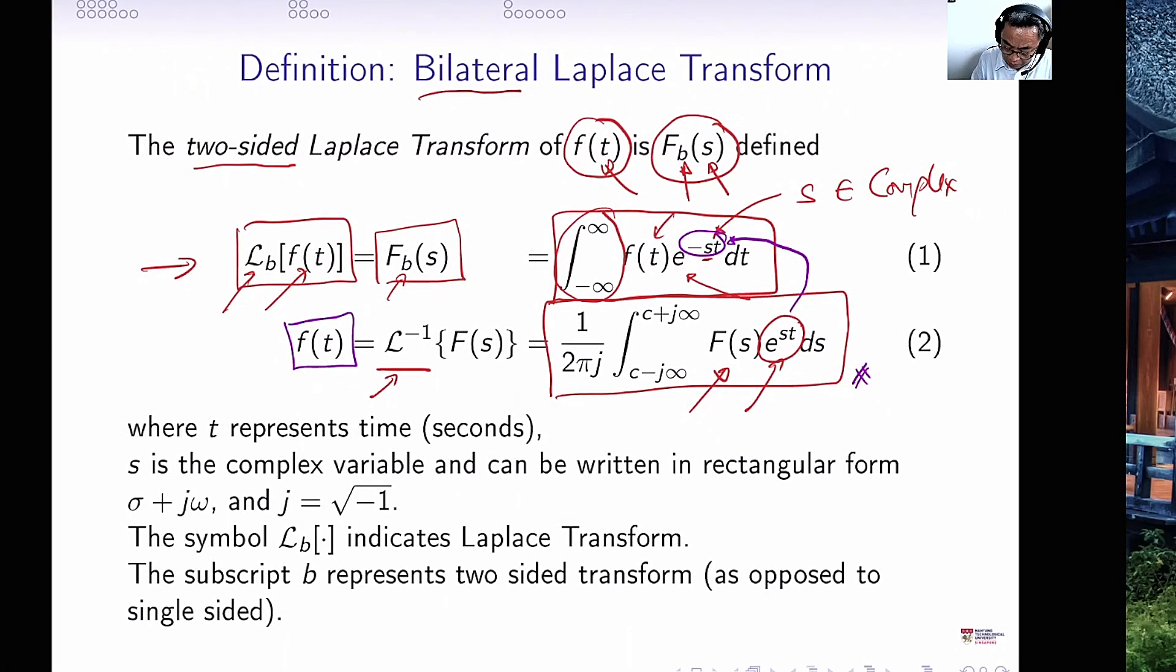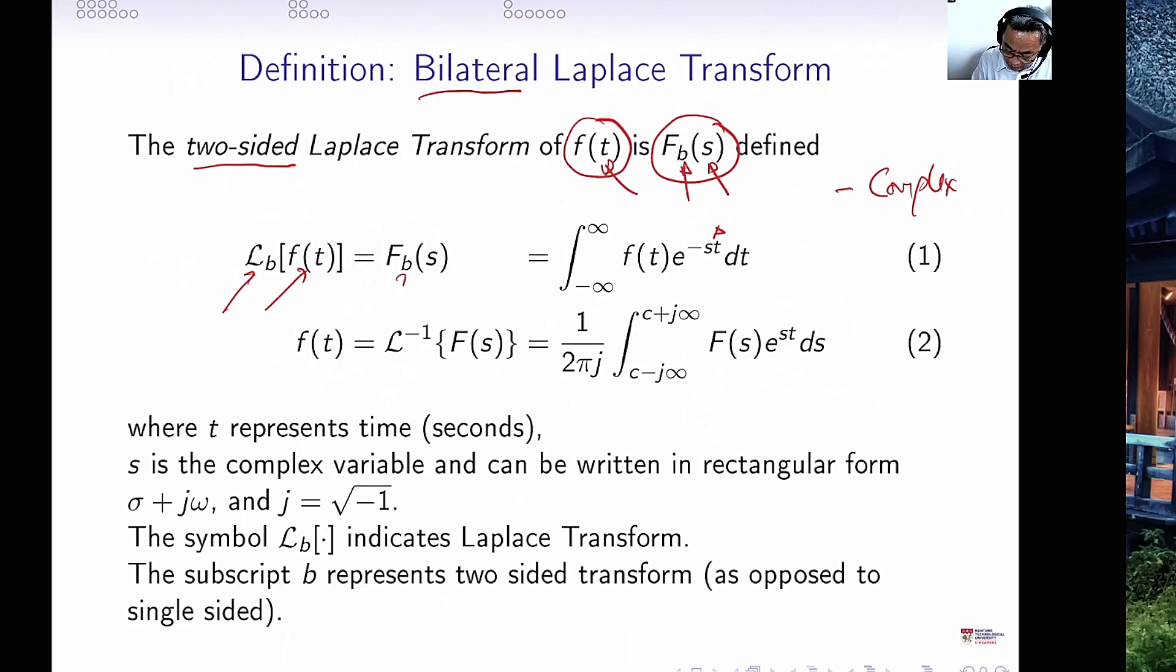To conclude, let us remind ourselves what s is. The s here, s is the complex number, and the complex number is the entire complex plane, denoted by σ + jω, where σ is the entire real number, and ω is the entire real number multiplied by j. So it is the entire complex plane.